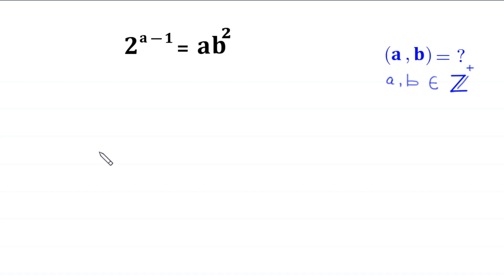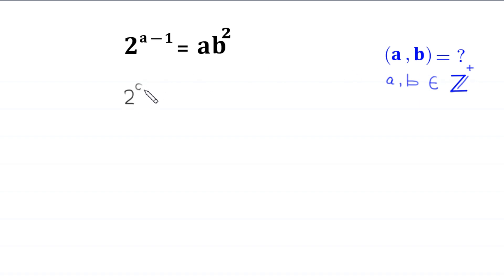Hello everyone, you are welcome to how to solve this very nice Diophantine equation: 2 to the power a minus 1 is equal to a times b squared. Our job is to find all possible values of a and b such that a and b are positive integers. So let us start. The equation is 2 to the power a minus 1 is equal to a times b squared.